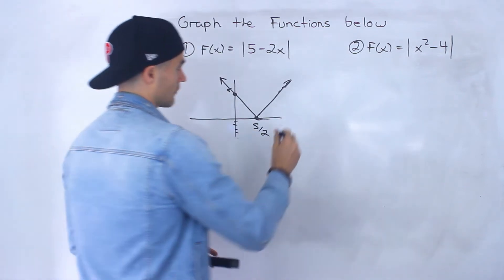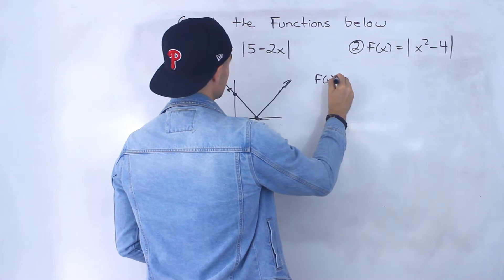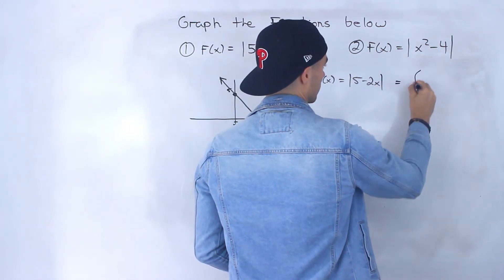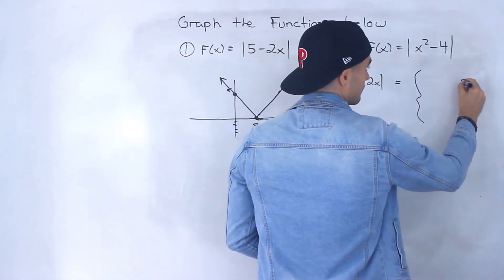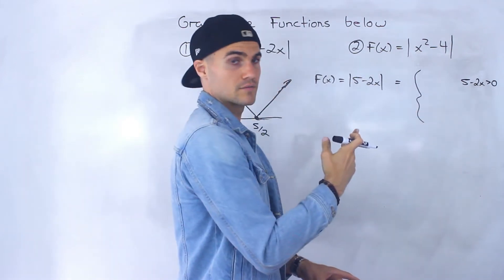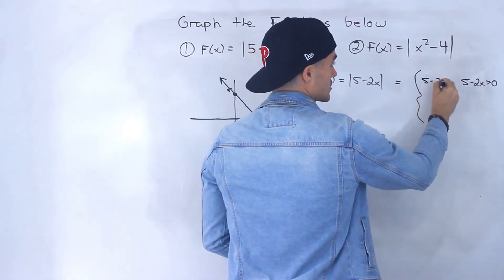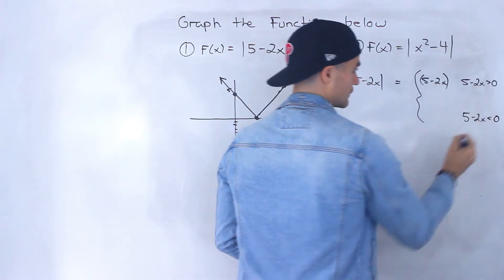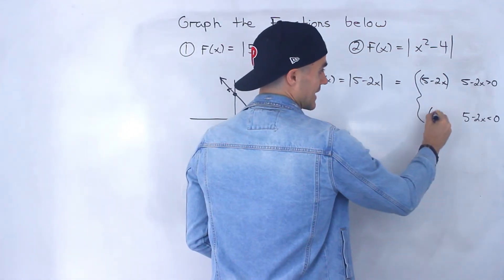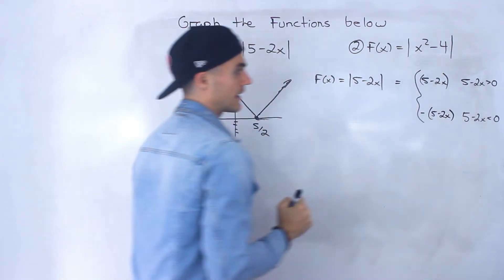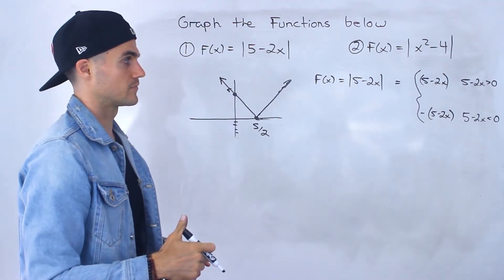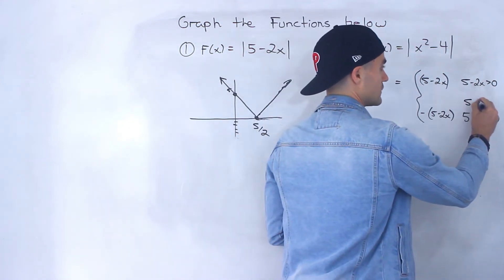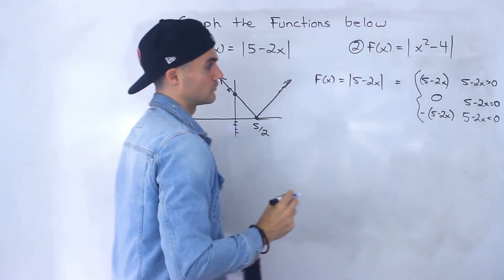A more proper way to show the algebra is to convert the absolute value function to a piecewise function. If 5 minus 2x is positive, we leave it as is. But if 5 minus 2x is negative — less than 0 — we multiply the expression by negative 1 to change it to a positive. And if it equals 0, the y-value is simply 0.